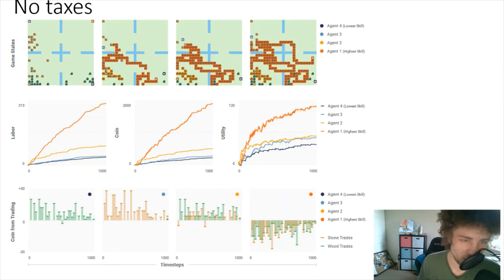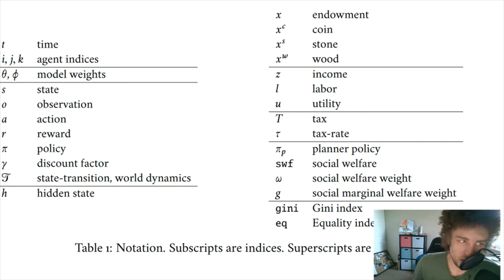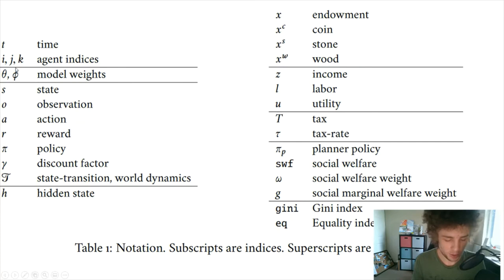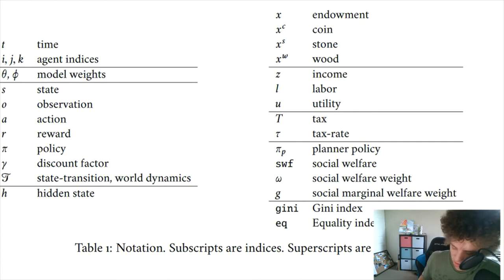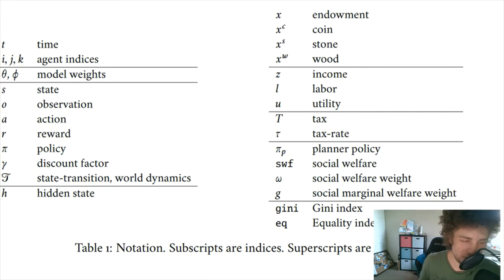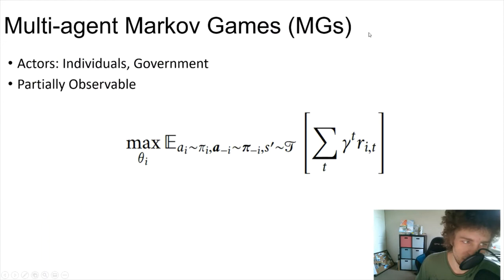Here's a brief overview of the variables they define: time state t, different indices, model weights, a state representing the board at any given time, an observation set of actions, the action to take, a reward for each individual actor, pi representing the policy, and a discount factor gamma which is forward-looking. The discount factor accounts for time value of money — a dollar today is worth more than a dollar next year. Additional variables include state transition dynamics, resources, tax rates, and planner policy.